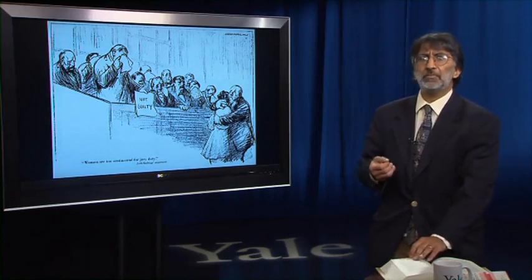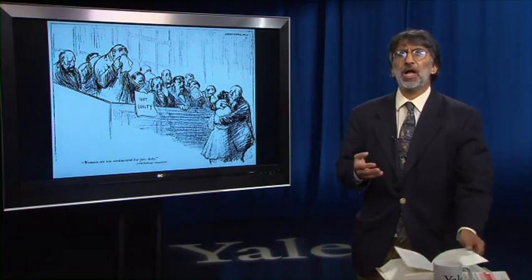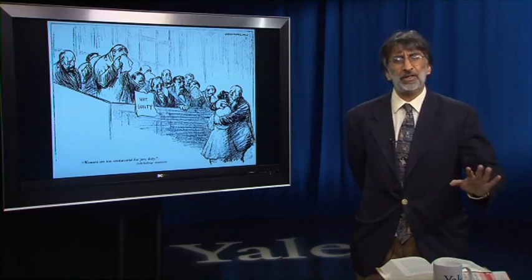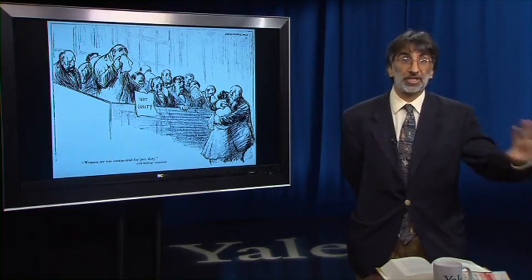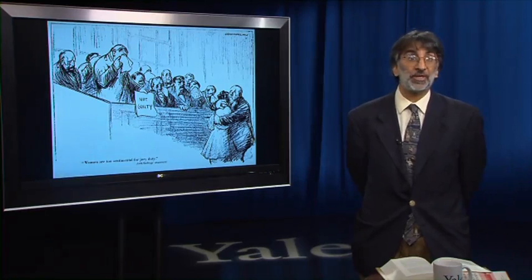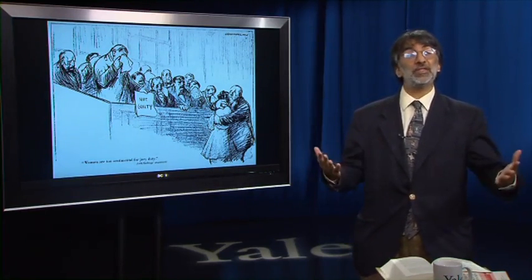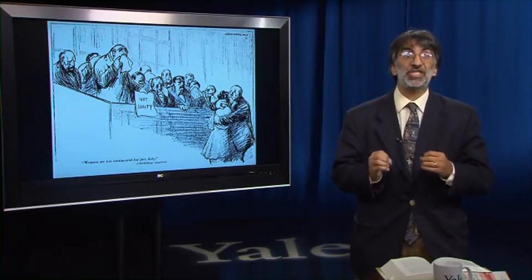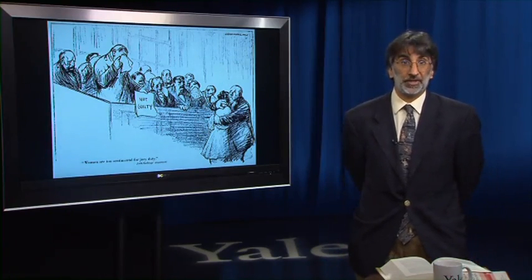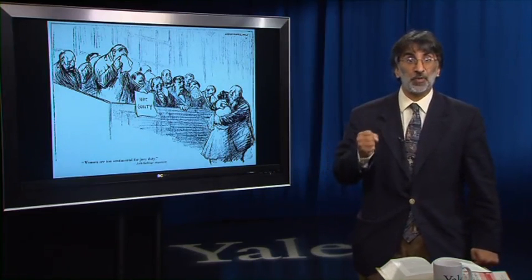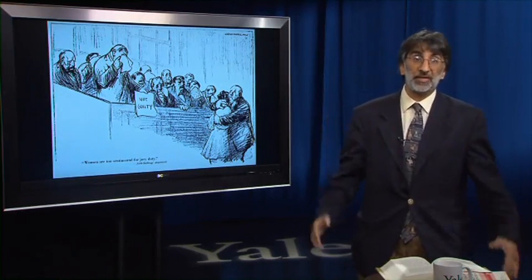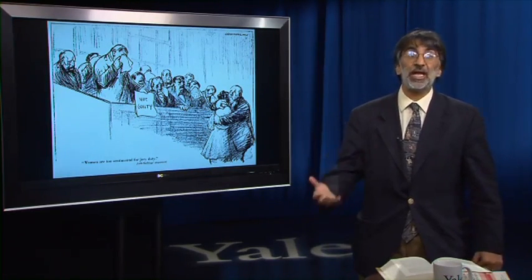So let's begin with a hypothetical. Let's imagine that Congress tomorrow were to pass a sweeping law aiming to vindicate women's rights — a law kind of along the lines of a statute called the Violence Against Women's Act that Congress actually did pass a while back, and part of which the Supreme Court in fact invalidated as going beyond Congress's power. Let's imagine that this law says that private violence against women, when a man attacks a woman because she's a woman, targets her because of her gender, is now a federal offense of some sort. And let's imagine that the law provides for special civil remedies for women who have been targeted by violent men because they are women.